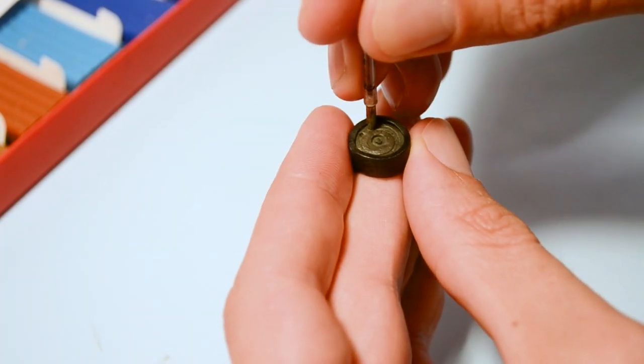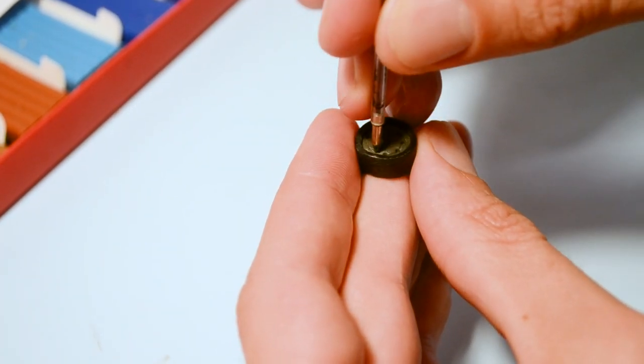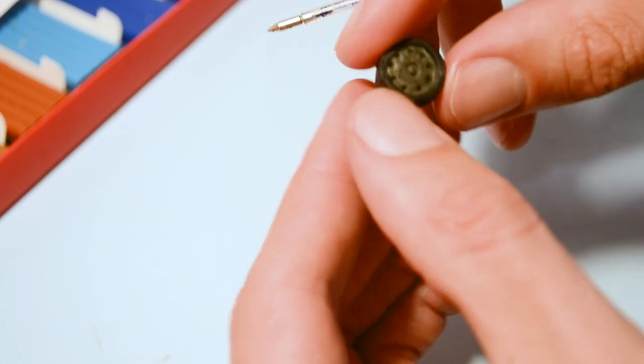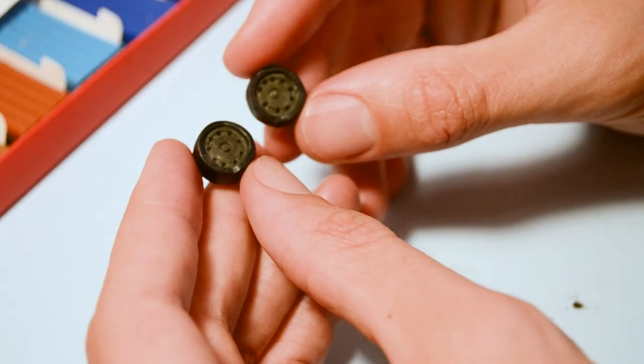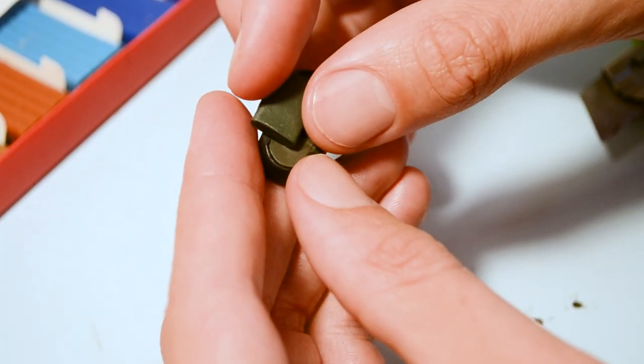Centurion Mark II and all other new versions had a new 118mm thick glacis. The side and rear armor had been increased from 38 to 51mm.